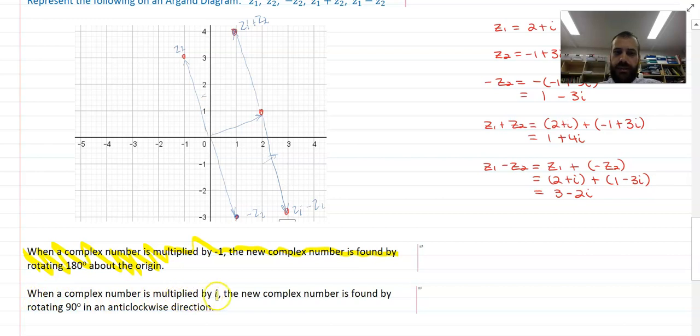When a complex number is multiplied by i, the new complex number is found by rotating 90 degrees in an anti-clockwise direction. And it's pretty easy to see why that is.